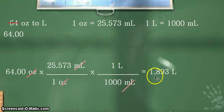So there you have it. Our final answer is 1.893 liters, which is equal to 64.00 ounces. So that's all for this example. Thank you for listening, and continue learning.